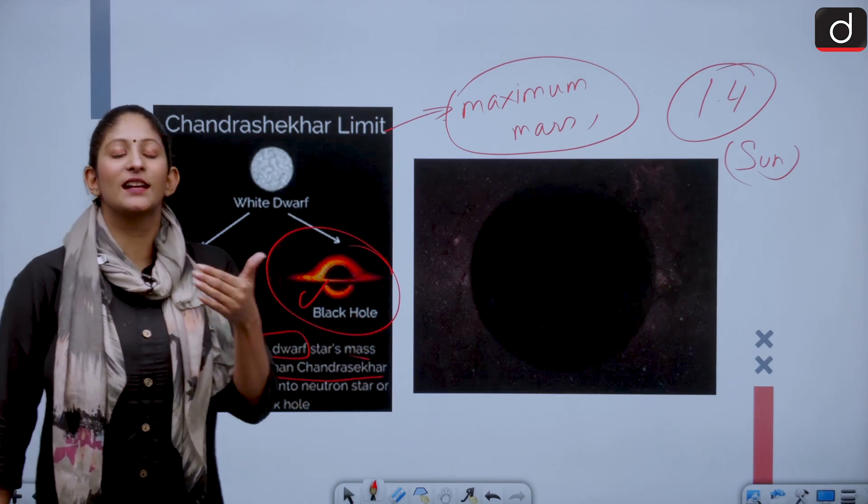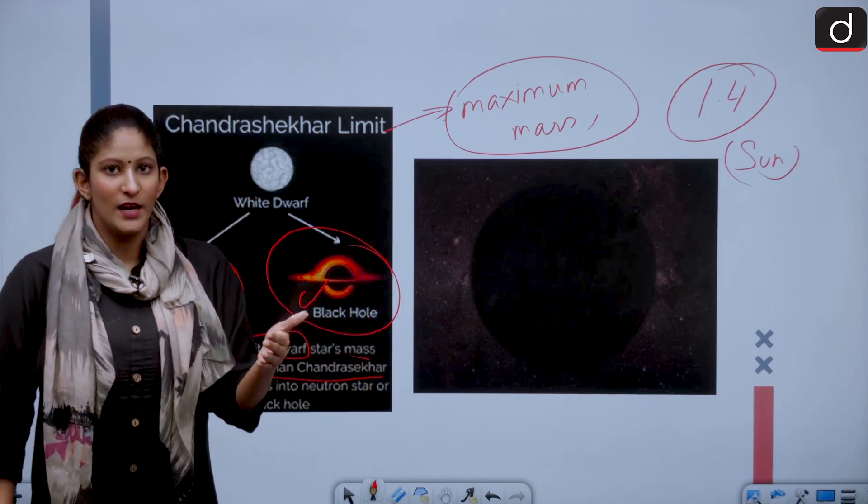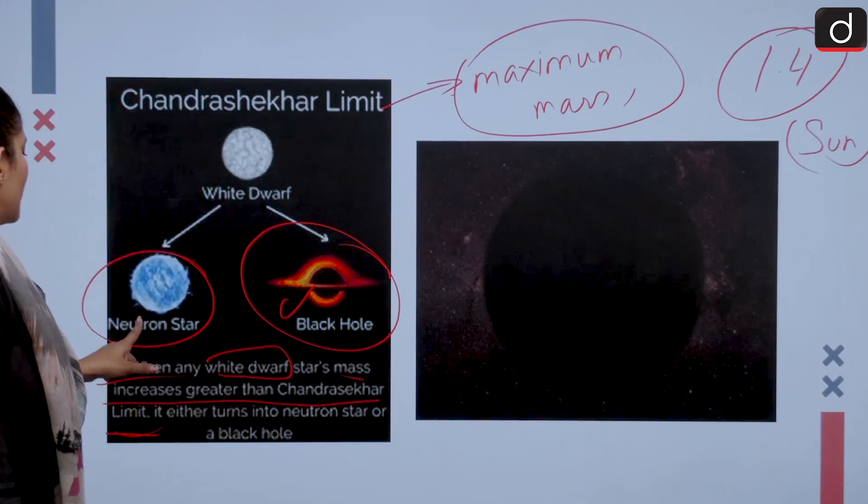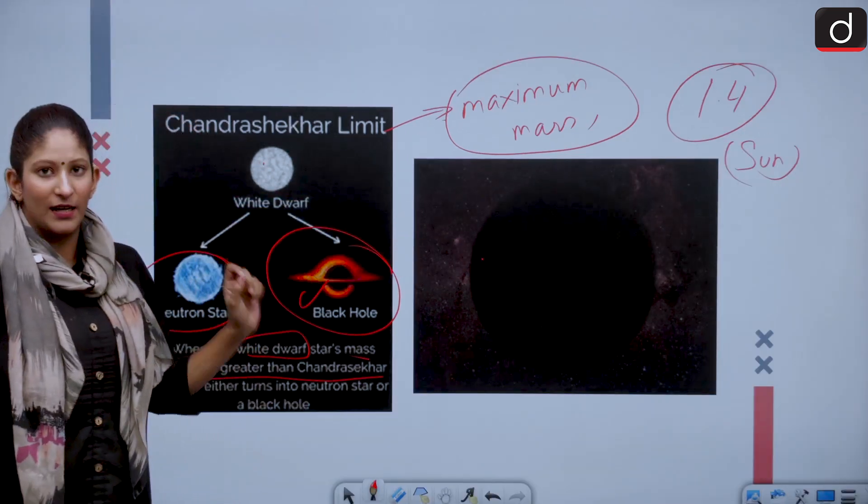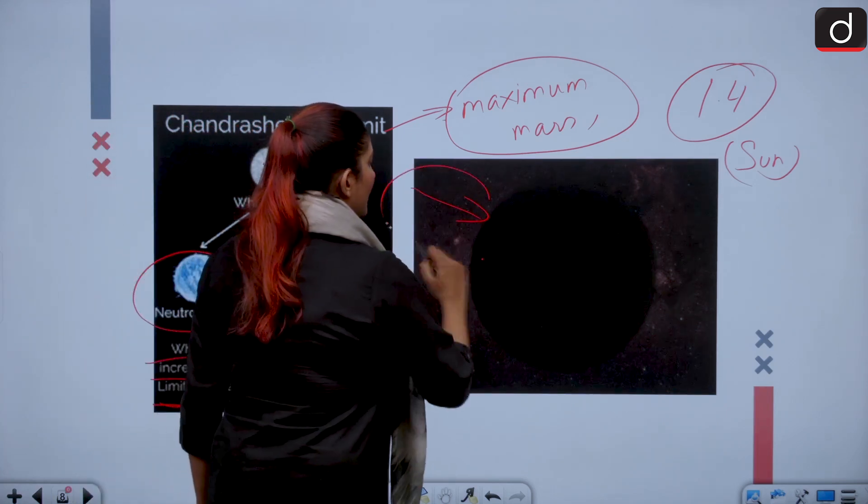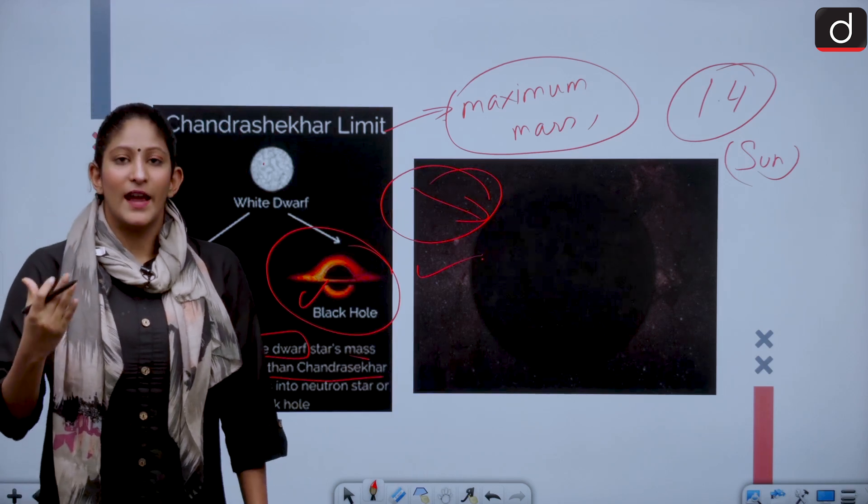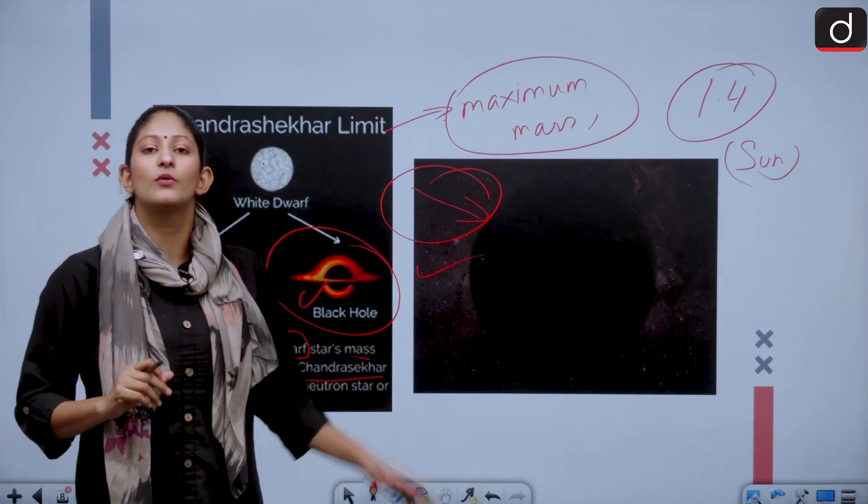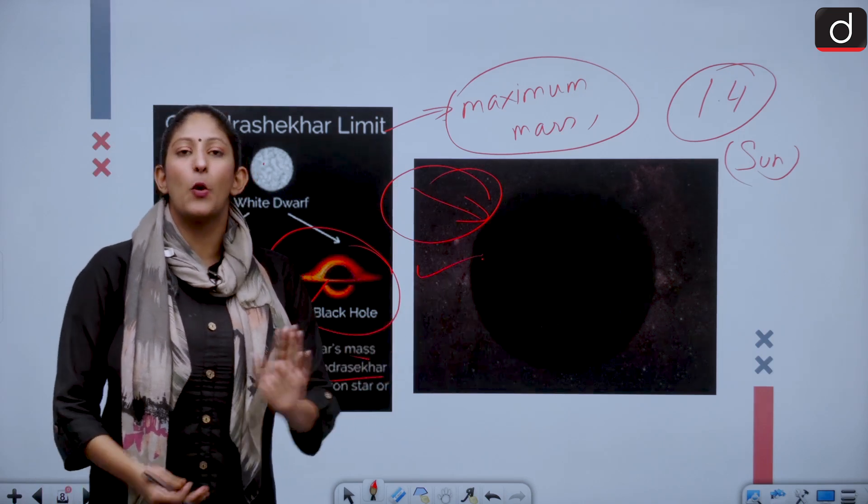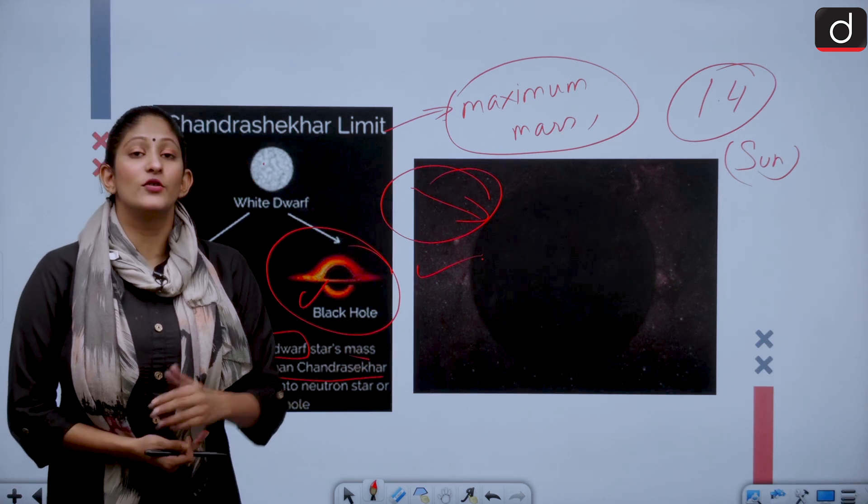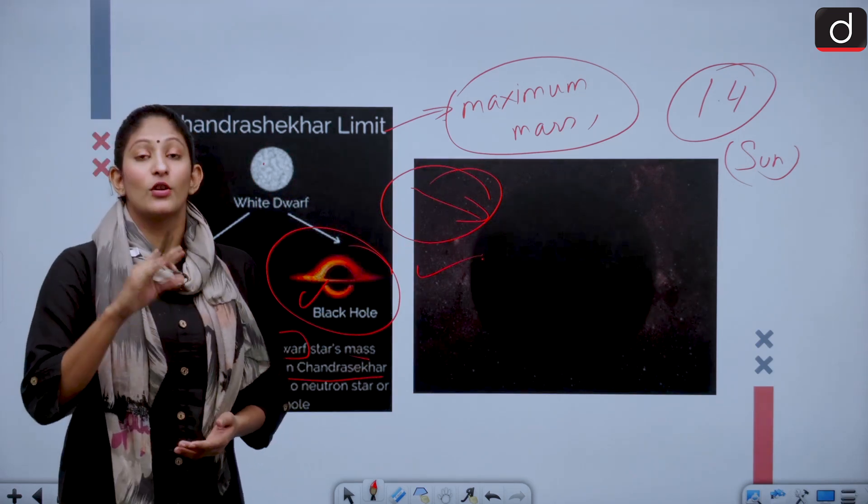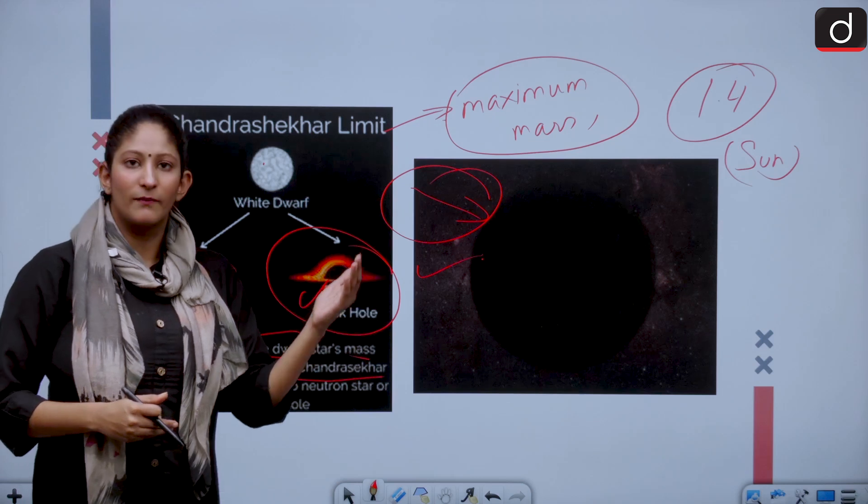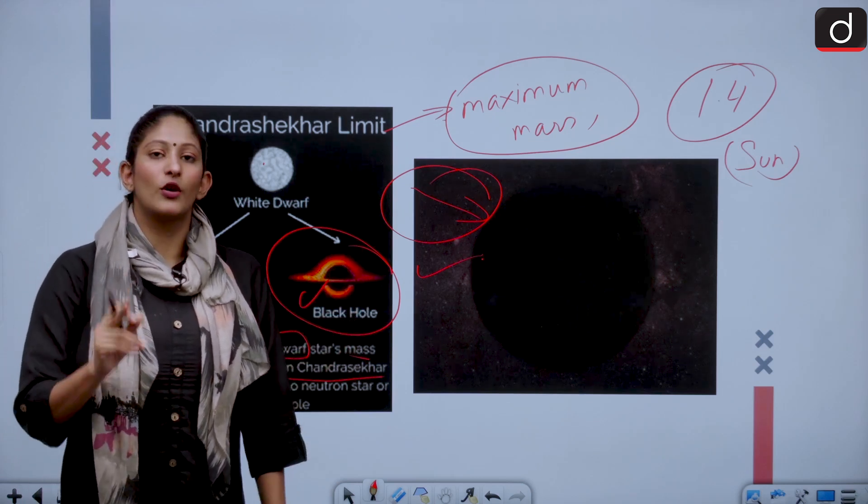Certain times, not always, neutron stars—white dwarfs basically—become black dwarfs. That means they do not have any possible chances of emitting energy and light. Up till now, there has been no discovery and no recognition of black dwarfs because the oldest stars that we know of are not eligible to become black dwarfs. Not all white dwarfs become black dwarfs. This is an important statement for your prelims. It could be asked that all white dwarfs become black dwarfs, but no—not all, but some might.